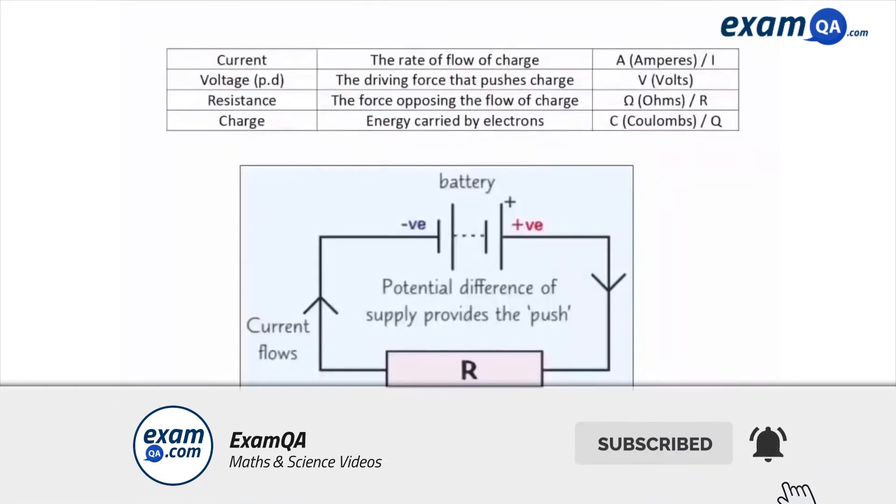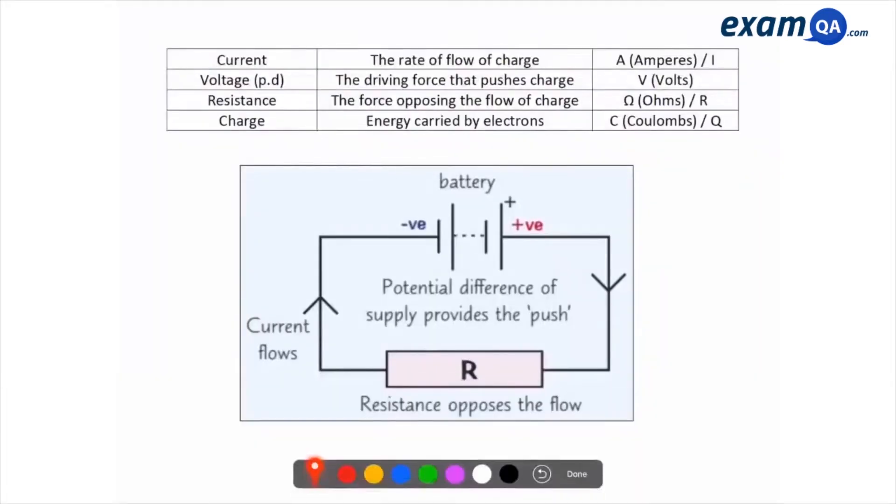Okay, topic two. So first of all, we have a few key words that we need to know and know their definition. Current is the rate of flow of charge, the units is amperes or amps and the symbol in equations is little i. But of course the units is A.